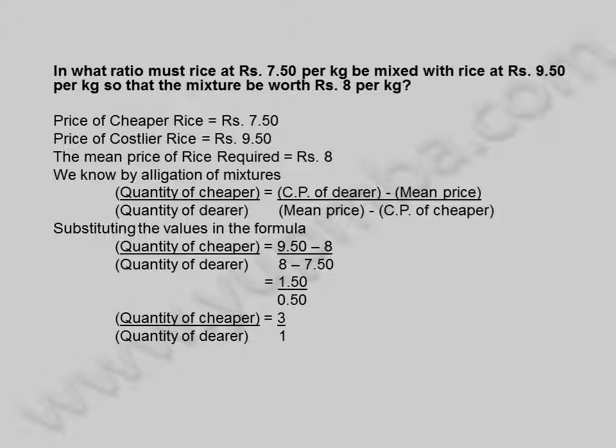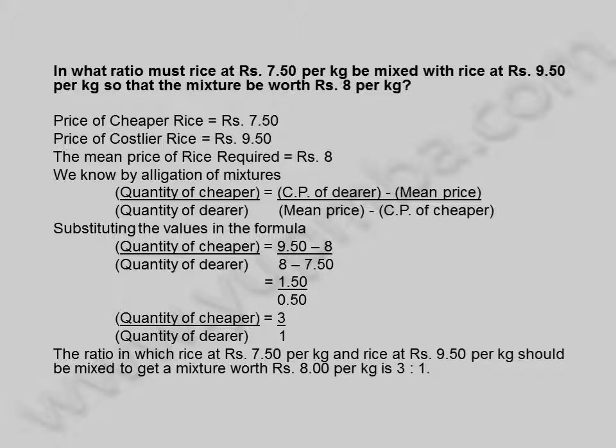Quantity of cheaper by quantity of dearer is equal to 3 by 1. The ratio in which rice at ₹7.50 per kilogram and rice at ₹9.50 per kilogram should be mixed to get a mixture worth ₹8 per kilogram is 3 is to 1. Let us see another example.